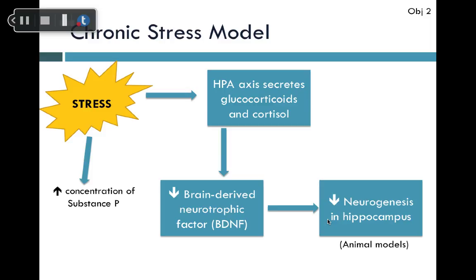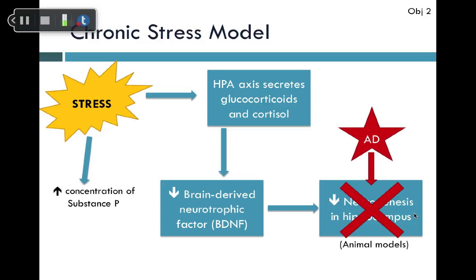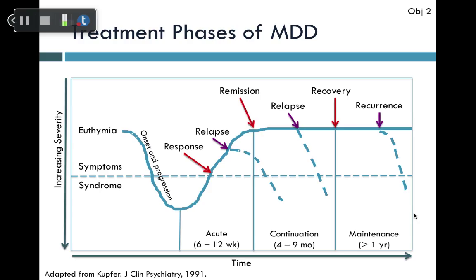The chronic stress model is a third contributing factor. Stress increases substance P, a painful substance, making depressed people feel more pain and worsening their depression in a vicious cycle. Stress also activates the HPA axis, secreting glucocorticoids and cortisol, which decreases brain-derived neurotrophic factor (BDNF), reducing neurogenesis in the hippocampus. In animal models, antidepressants can block this decreased neurogenesis, though this has not yet been demonstrated in humans.